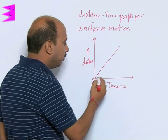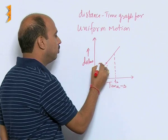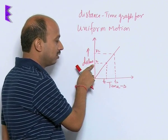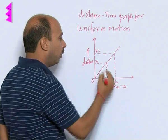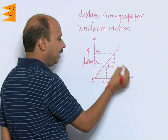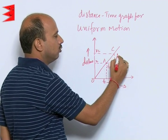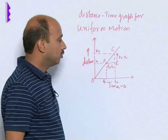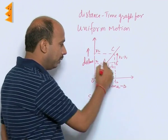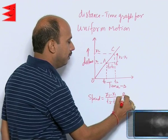We can take any two points. Corresponding to one point, time is T1 and for the other, time is T2; the distance for T1 is X1 and the distance for T2 is X2. You just draw this line here, getting T2 minus T1. We can label points A, B, and C, where BC is X2 minus X1 and AB is X1. So speed in time interval T1 to T2 equals X2 minus X1 upon T2 minus T1, which we can write as BC upon AB.